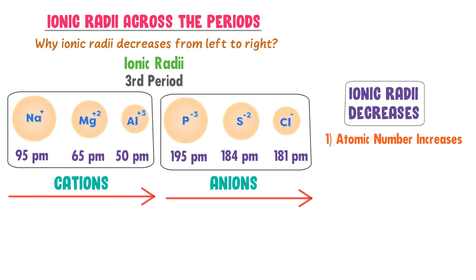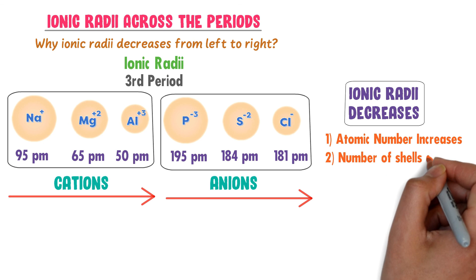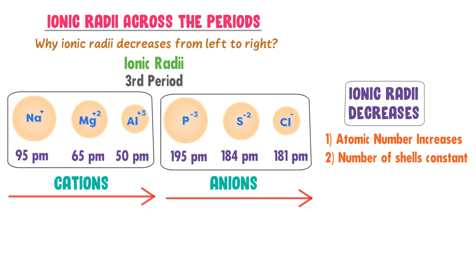Ionic radii decrease across the period because the atomic number increases while the number of shells remains constant — for instance, all these third-period elements have three shells. Therefore, ionic radii decrease across the period. I hope that you have learned all about ionic radii and the trends of ionic radii in the periodic table.